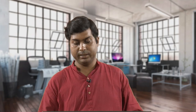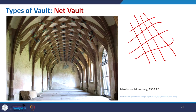Net vault is something where, like a net, a checker pattern of multiple curvatures cross each other to create this kind of net. This is an example of the net vault.